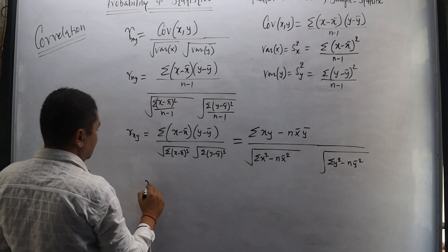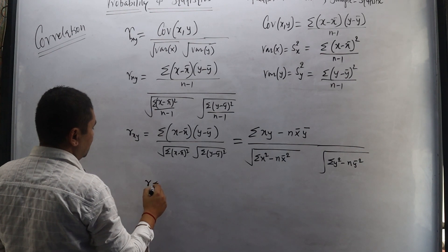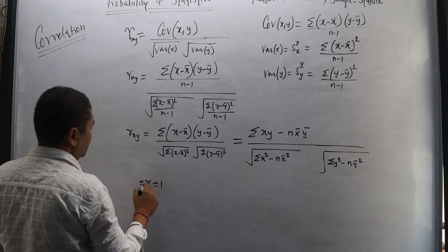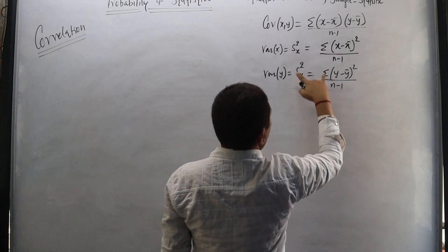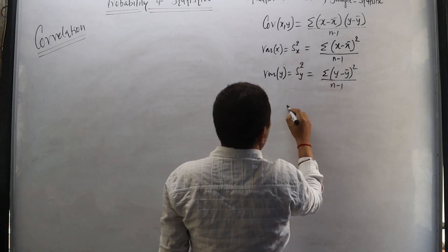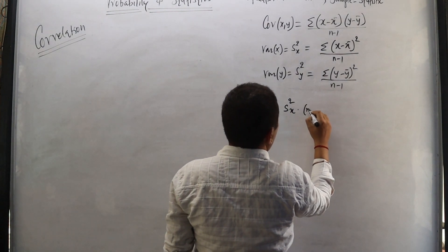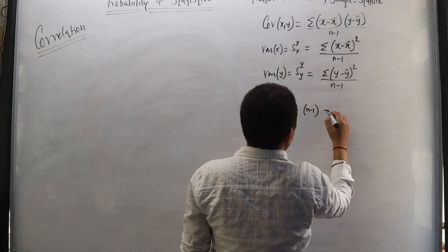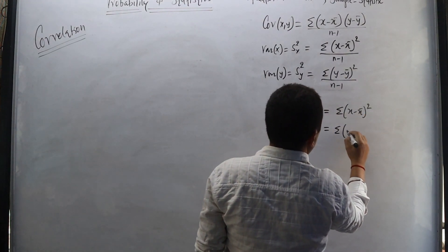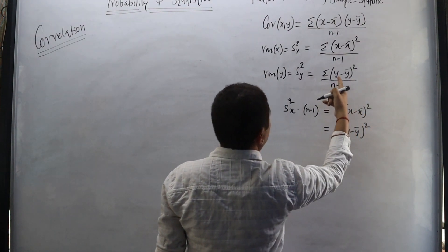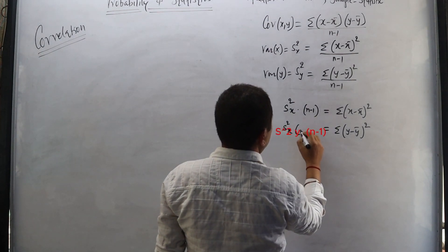So r_xy, or simply r, the correlation is always less than or equal to 1 and greater than or equal to −1. In order to prove that relation, let us further modify this. We note that s²_x × (n − 1) equals summation of (x − x̄)², and s²_y × (n − 1) equals summation of (y − ȳ)².